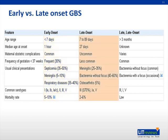Late onset infection can occur anywhere from one week to three months of life, with a median age of 27 days. Affected infants are usually asymptomatic early on, but then present with fever, lethargy, and poor feeding. Bacteremia is the most common presentation, but patients can also have meningitis, pneumonia, osteomyelitis, cellulitis, or adenitis. Osteomyelitis is most common in the proximal humerus. The mean age of diagnosis for arthritis is 20 days, with the knee and hip joints most commonly involved.